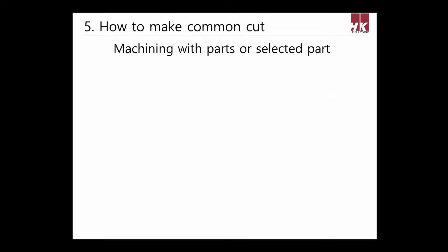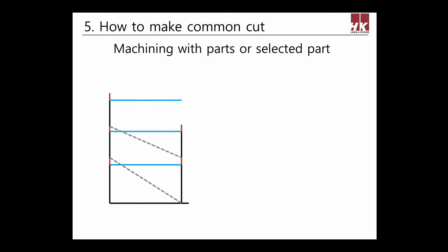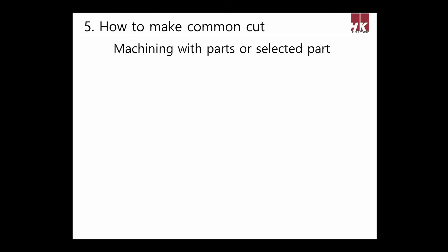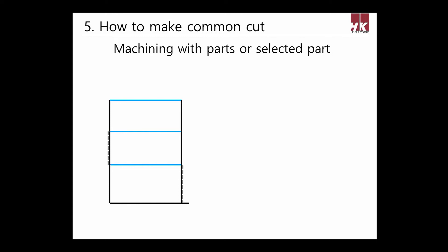Let's find out how to make machining when sharing several parts. Use parts or a set of selected parts and drag parts to cut one shape at a time. At this time, both sides of the CommonCut line will be cut before the next part, up to the preliminary cut length. The next part will be cut from the preliminary cut point without piercing. If there is no need to use preliminary cut, input preliminary cut as zero. The next part cutting will start from the CommonCut line, but be careful because this will cause edge collision.